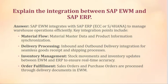Explain the integration between SAP EWM and SAP ERP. SAP EWM integrates with SAP ERP — ECC or S/4HANA — to manage warehouse operations efficiently. Key integration points include: material master data and product information synchronization; delivery processing for inbound and outbound deliveries for goods receipt and shipping processes; inventory management for stock movements and inventory updates between EWM and ERP to ensure real-time accuracy; and order fulfillment, where sales orders and purchase orders are processed through delivery documents in EWM.